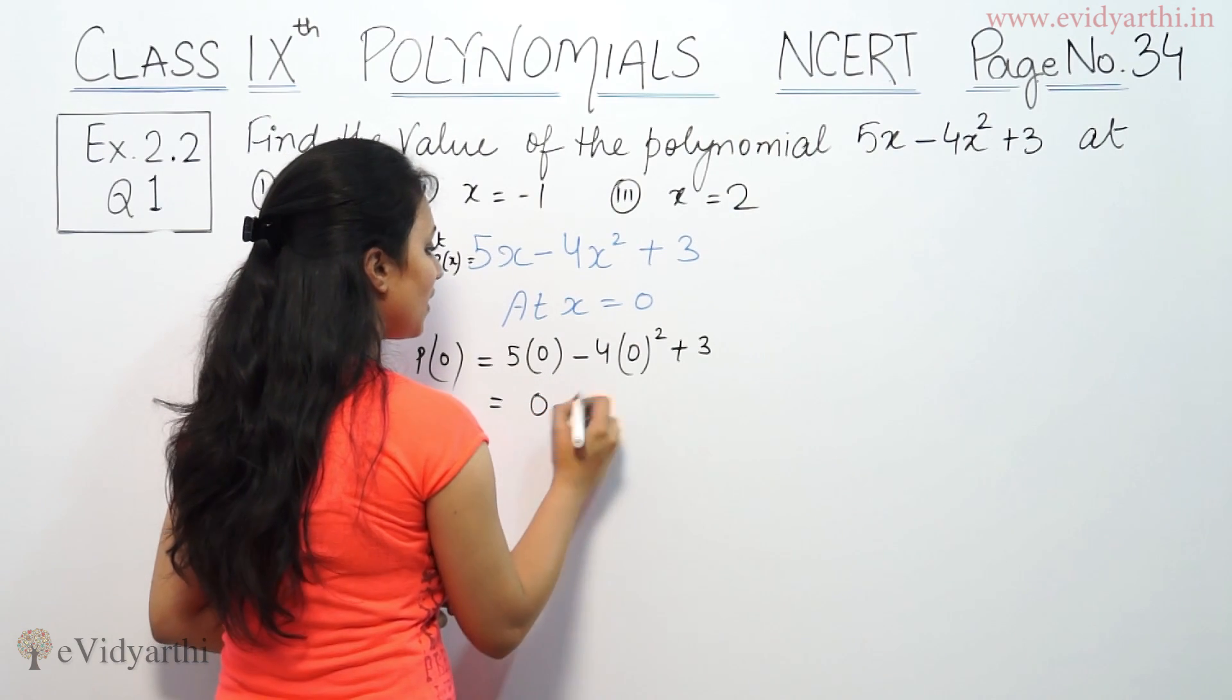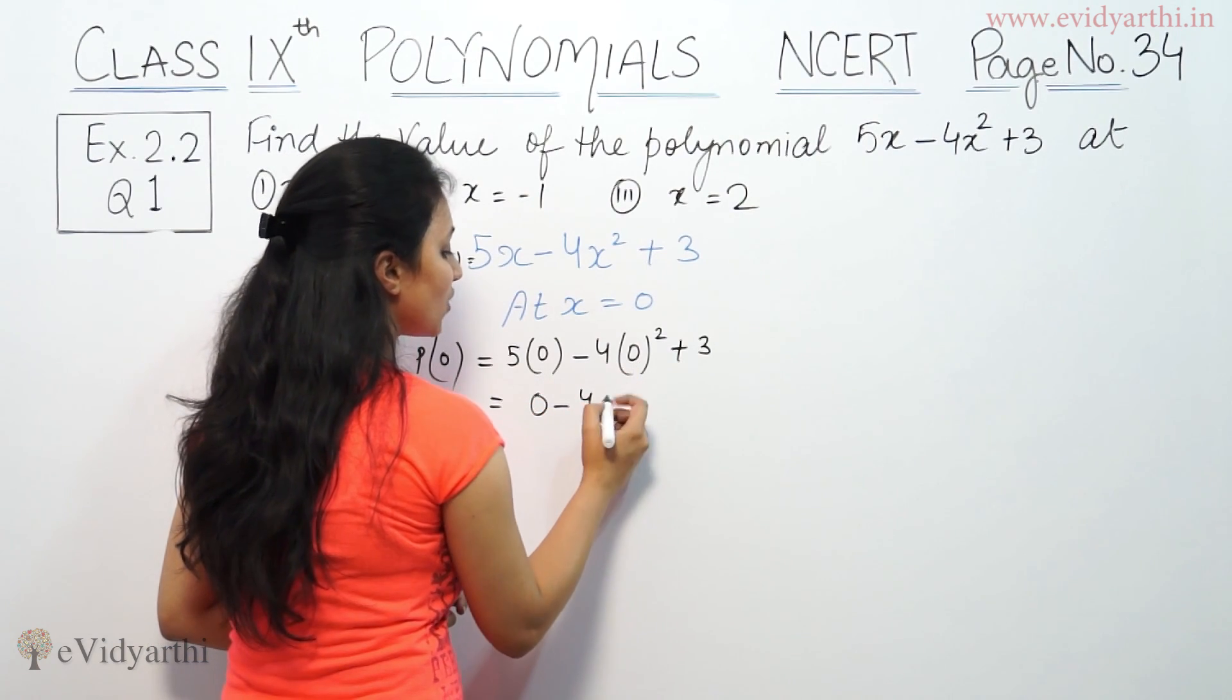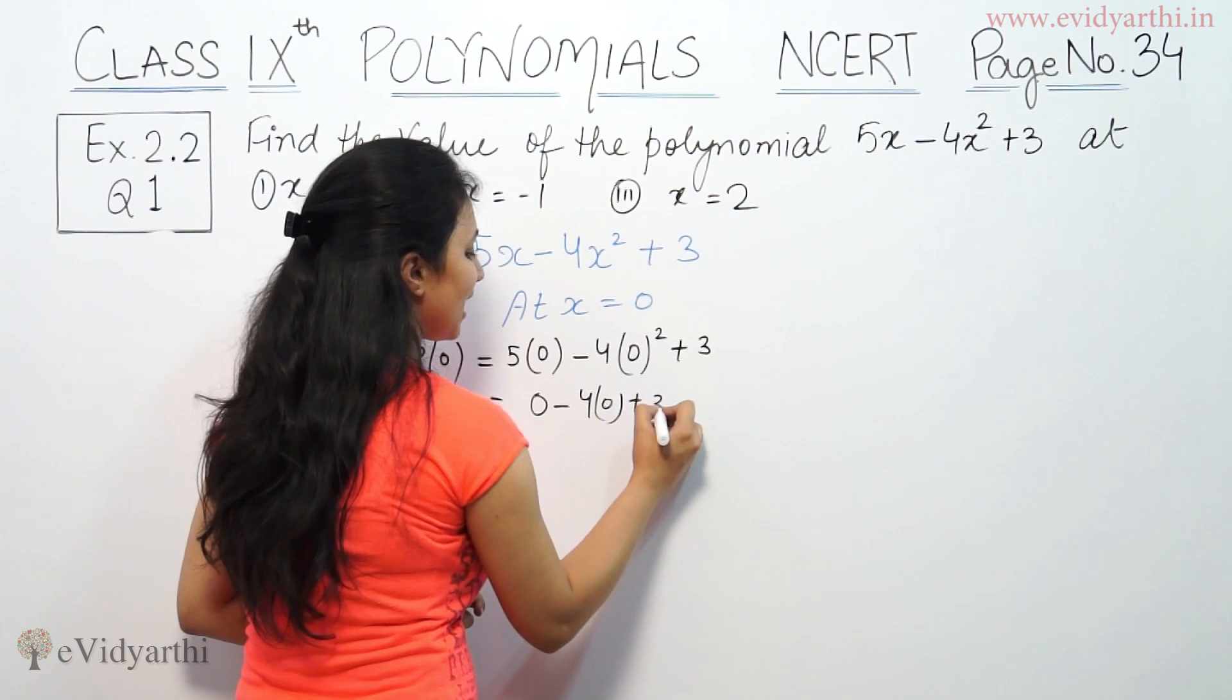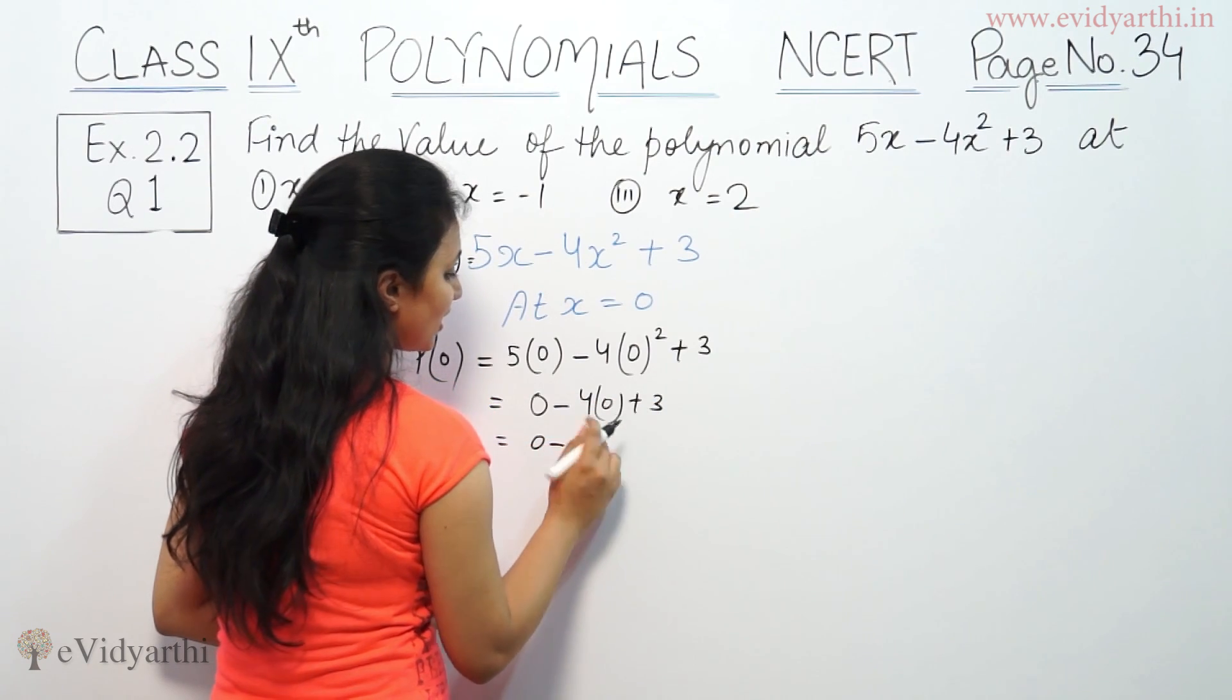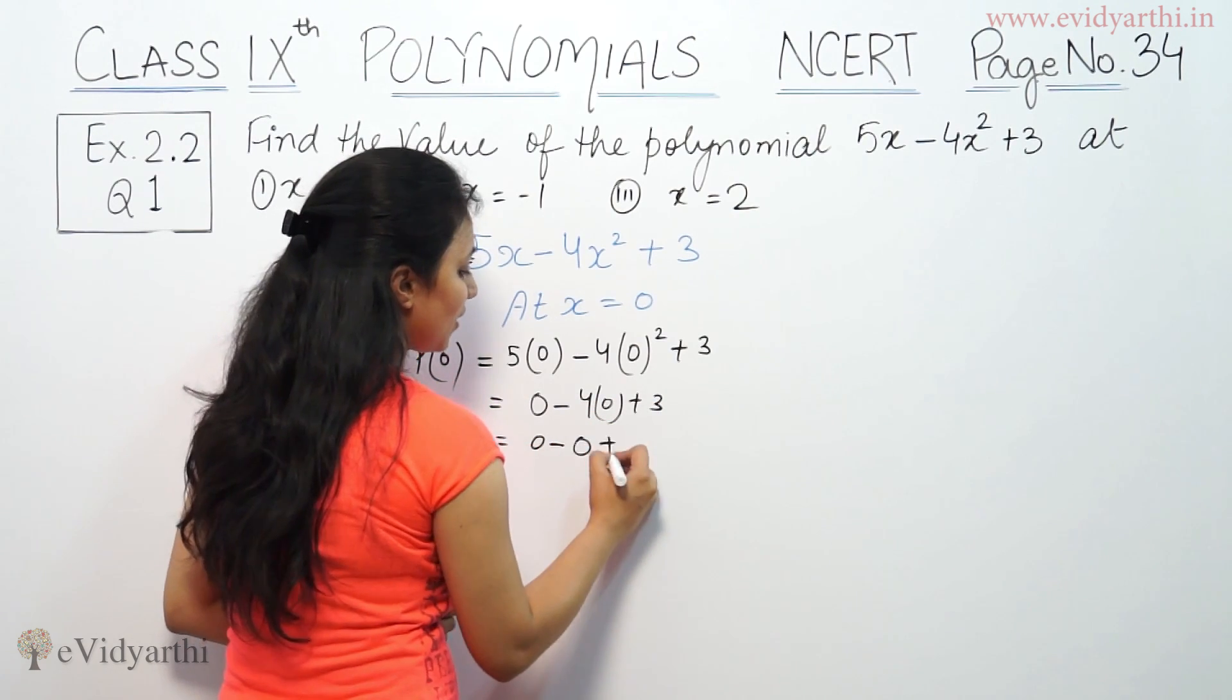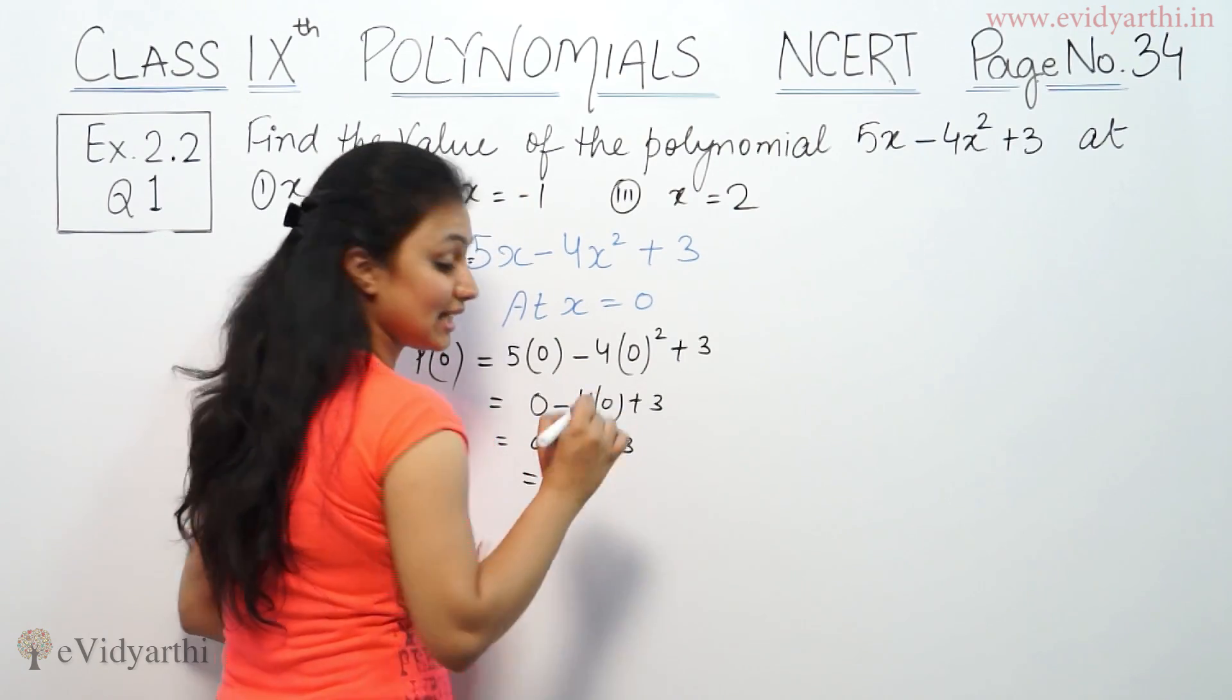So 5 into 0 will be 0, 4 times 0 squared is 0, plus 3. 0 minus 4 into 0 is 0 plus 3. So the answer is 3.